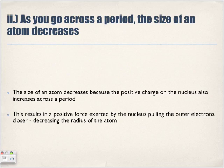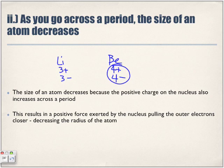As you go across a period, the size of an atom decreases because the positive charge on the nucleus also increases across the period. In the example of lithium and beryllium, we had three protons and four protons, three electrons and four electrons. Adding that extra proton causes a greater attraction with the electrons on the outer energy level, resulting in the radius decreasing as we move from left to right in the periodic table. The positive force exerted by the nucleus pulls the outer electrons closer, thus decreasing the radius of the atom.